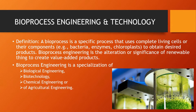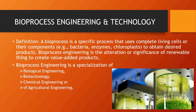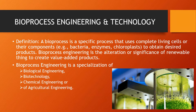As far as the definition is concerned, a bioprocess is a specific process that uses complete living cells or their components — for example, bacteria, enzymes, or chloroplasts — to obtain a desired product. It is the synthesis of a certain product from a given substrate using a living being or its component. Using any microorganism, we are converting one substrate to a specific product; that is known as a bioprocess.